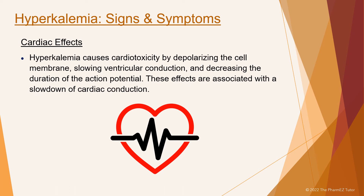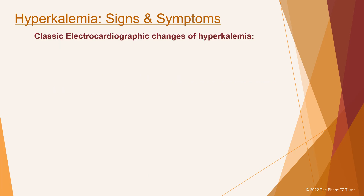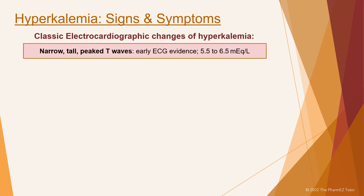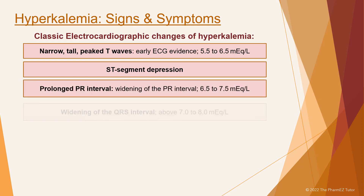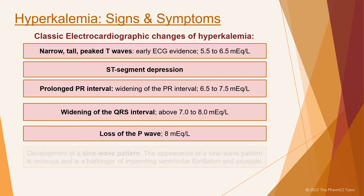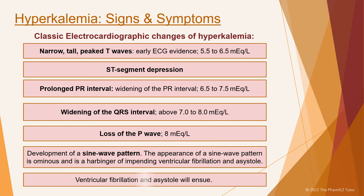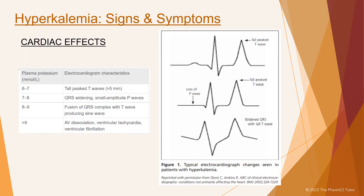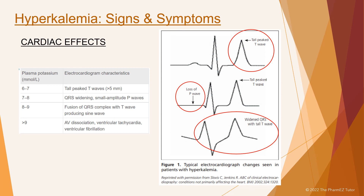Finally, cardiac effects occur. Hyperkalemia causes cardiotoxicity by depolarizing the cell membrane, slowing ventricular conduction, and decreasing the duration of the action potential. These effects are associated with a slowdown of cardiac conduction. The classic electrocardiographic changes of hyperkalemia occur as follows: first, narrow tall peaked T waves, followed by ST segment depression, a prolonged PR interval, widening of the QRS interval, loss of the P wave, and then the development of a sine wave pattern. This will eventually lead to ventricular fibrillation and asystole if not corrected. Here's a diagram of how hyperkalemia is exhibited on the ECG, showing the tall peaked T wave, the loss of the P wave, and finally widened QRS with a tall T wave.